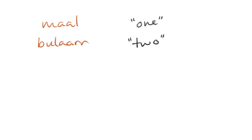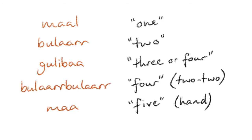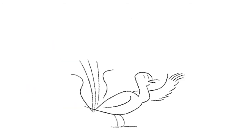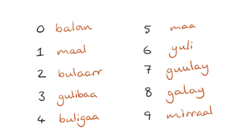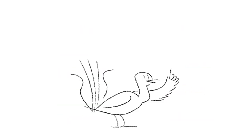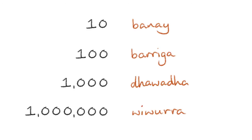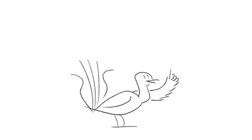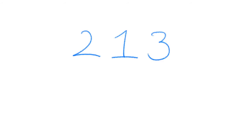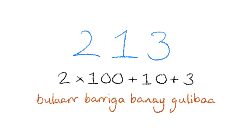Numbers. Even though originally, like many Australian languages, people could only linguistically count up to five and anything above that was considered 'many' or 'a lot', modern Gamilarai uses a decimal system. There are words for ten, hundred, thousand, and million, and numbers higher than twenty are expressed with the multiplying number first followed by the place value. So for example, the number 213 would be expressed as two times a hundred, plus ten, plus three.